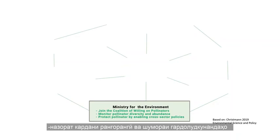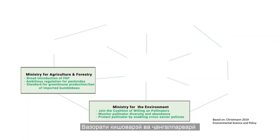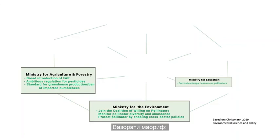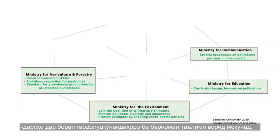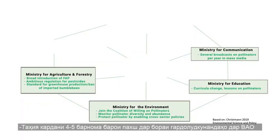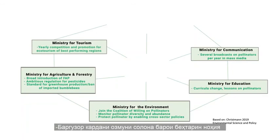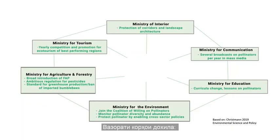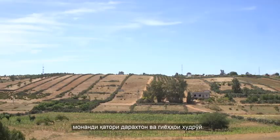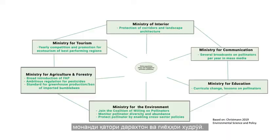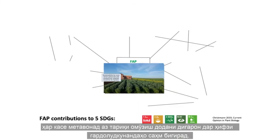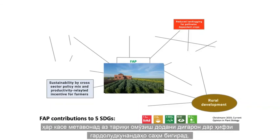Ministry for Agriculture and Forestry: introduce FAP broadly, and set into force an ambitious regulation for pesticides. Ministry for Education: include lessons on pollinators in school curricula. Ministry for Information: promote four to five broadcasts on pollinators in mass media per year. Ministry for Tourism: conduct a yearly competition for the best performing region for promotion as an ecotourism site for pollinator protection. Ministry of Interior: protect valuable landscape architecture like hedgerows or other corridors. Involve as many governmental and non-governmental actors as possible. Everybody can contribute to pollinator protection by teaching others, conservation activities, or consumer decisions. Everybody will benefit.